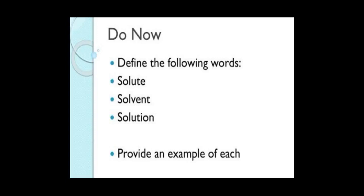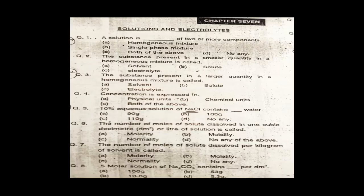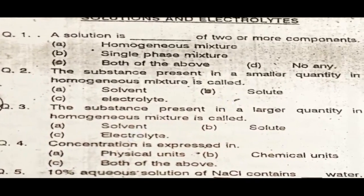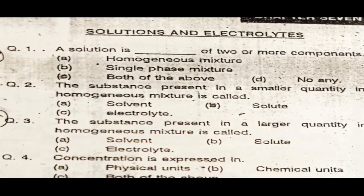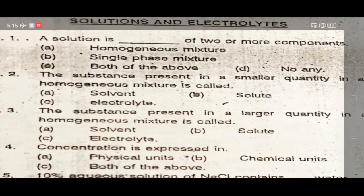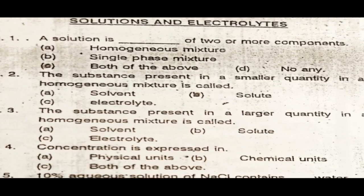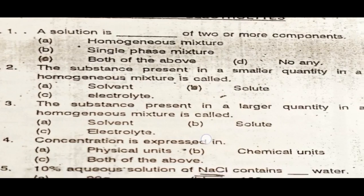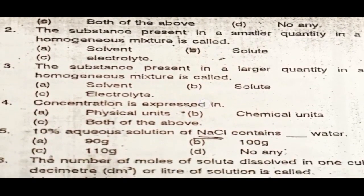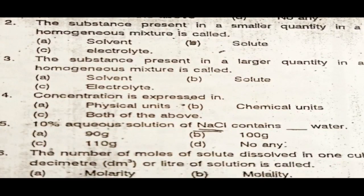This is homework for you: define the following words — solute, solvent, solution — and provide an example of each. Now I have some MCQs for you. Question 1: A solution is blank of two or more components — homogeneous mixture, single phase mixture, both of the above, or none. Question 2: The substance present in a smaller quantity in a homogeneous mixture is called solvent, solute, or electrolyte. Question 3: The substance present in larger quantity in a homogeneous mixture is called solvent, solute, or electrolyte. Question 4: Concentration is expressed in physical units, chemical units, or both of the above.